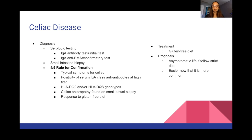To diagnose, we start with serologic testing — IgA antibody tests initially, then IgA anti-EMA for confirmation. They may take a small intestine biopsy to look for atrophied villi. There's a four-out-of-five rule for confirmation: typical symptoms, positivity of serum IgA class autoantibodies at a high titer, HLA-DQ2 and/or HLA-DQ8 genotypes, celiac enteropathy found on small bowel biopsy, and a positive response to a gluten-free diet. Treatment is strictly a gluten-free diet — there are no drugs. If you stick to it, these people can have a very asymptomatic life.